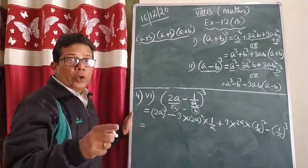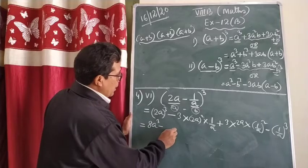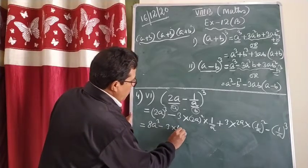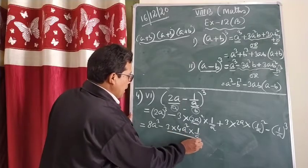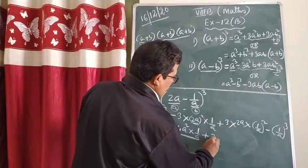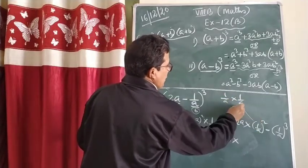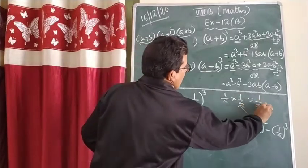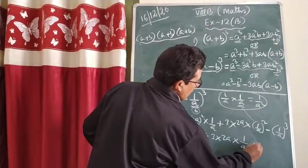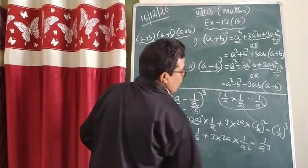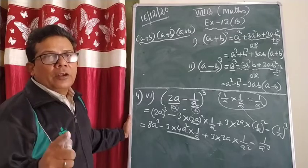Now 2a × 2a × 2a = 2×2×2 = 8, so (2a)³ = 8a³. Then 3 × 4a² × (1/a): the a in the denominator cancels one power of a from a², leaving 12a. And for 3 × 2a × (1/a²): the a cancels, leaving 6 × (1/a). For (1/a)³: 1×1×1 = 1 on top and a×a×a = a³ on the bottom, so it is 1/a³.